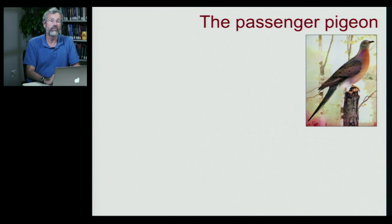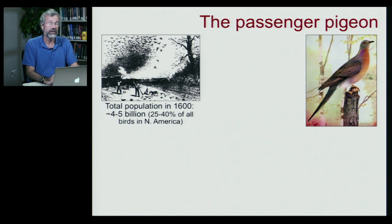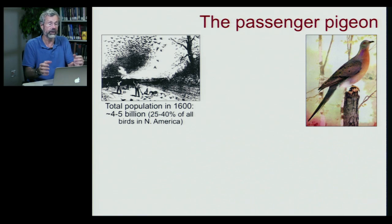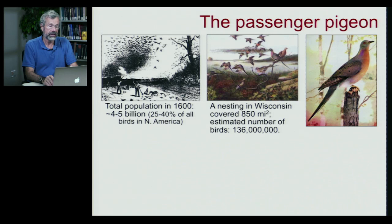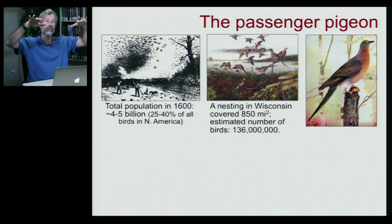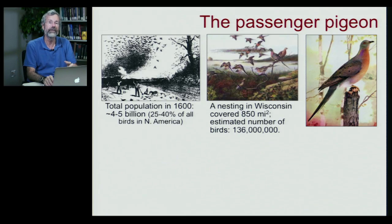The passenger pigeon is an even more extraordinary story, and unlike the bison, this one was not deliberate. The passenger pigeon was once an incredibly abundant bird in North America. It's estimated that in 1600, there were between 4 and 5 billion passenger pigeons — that would be between a quarter and almost half of all individual birds on this continent. In Wisconsin, a single nesting aggregation covered an area of 850 square miles with an estimated 136 million birds. There were so many birds nesting on oak trees that their weight would cause branches to collapse.